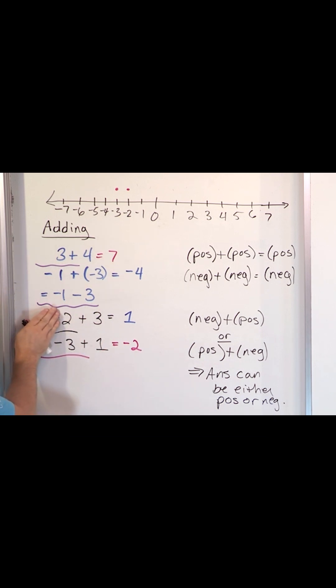So 3 minus 2 is 1. Forget the negative sign here. 3 minus 2 is 1. But you have to then decide on the sign of the answer. The sign of the answer is always going to be the same sign as the larger number, the absolute value of the larger number.